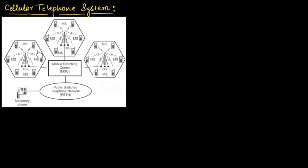This figure shows the schematic diagram of a cellular telephone system. The geographical area is divided into hexagonal shapes, and each hexagonal shape is known as a cell.